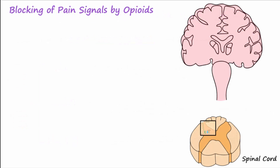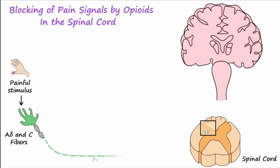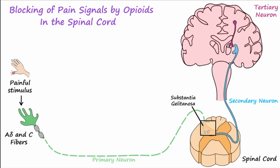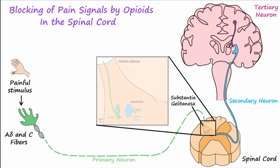The best understood mechanisms of opioid action are those that occur in the spinal cord. Pain signals are transmitted from the periphery to the CNS by way of lightly myelinated A-delta fibers or non-myelinated C fibers, which make up the primary neuron. In the substantia gelatinosa of the spinal cord, the primary neuron synapses with a secondary neuron that carries the pain signal to the brain.